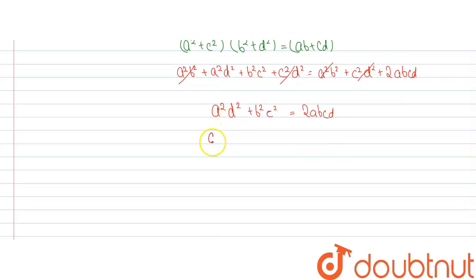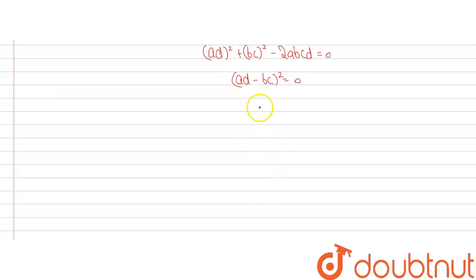So now this equation can be written as a²d² plus b²c² minus twice of abcd is equal to 0, which means we can write ad minus bc all square equal to 0, which means ad is equal to bc.